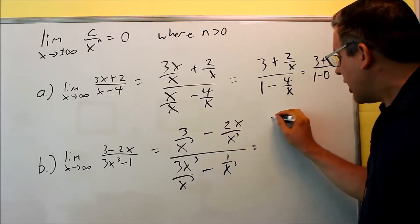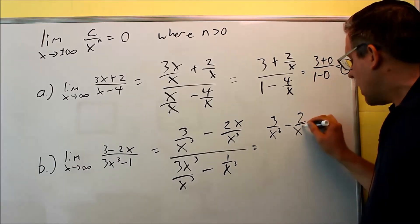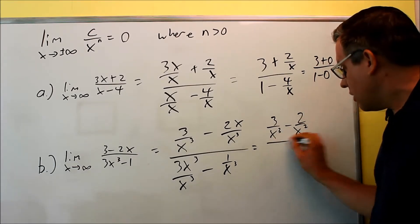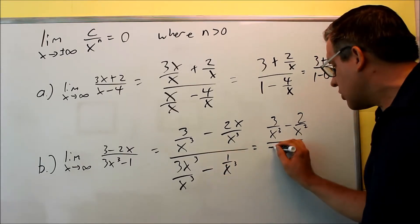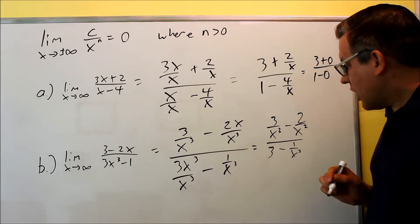This first one doesn't simplify. 3 over X cubed, and I have minus 1 of the X's cancel. I get 2 over X squared. At the bottom, X cubed's cancel, and I get 1 over X cubed. All right. Now, in this case.